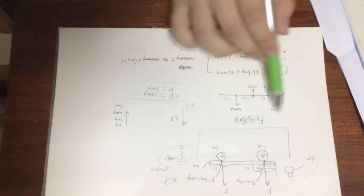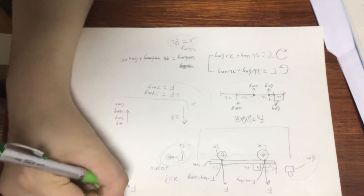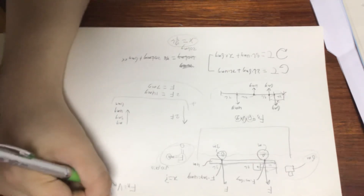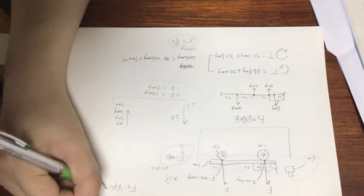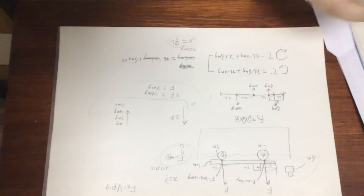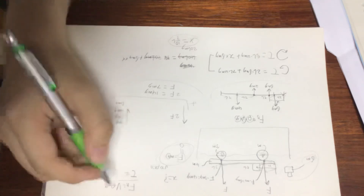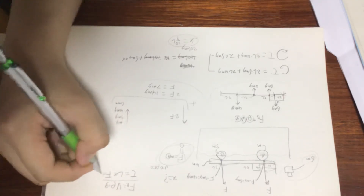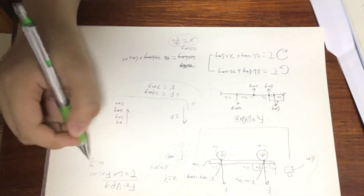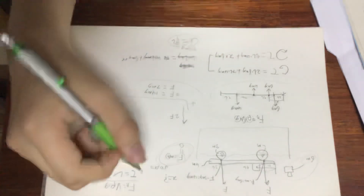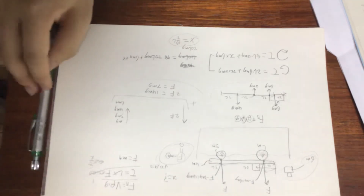All you need to know to solve this is: buoyancy equals the volume of liquid displaced times the density of the liquid times the gravitational acceleration. You also need to know that torque is a vector with direction, equal to length times force times sin(theta). In this case everything was perpendicular so theta was pi over 2 and sin(theta) equals 1. Combined with F equals MA, those are all the tools required.